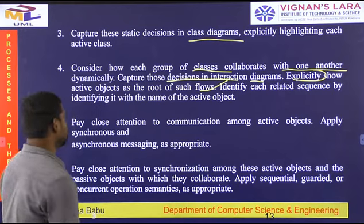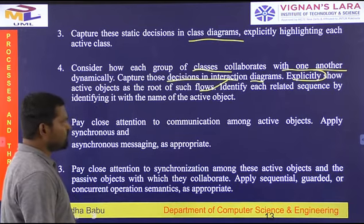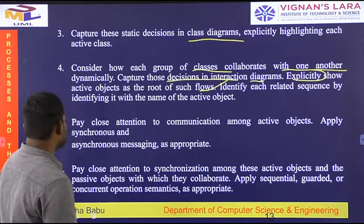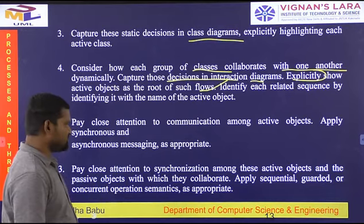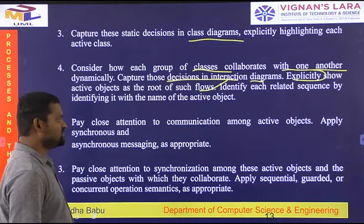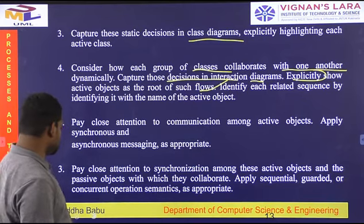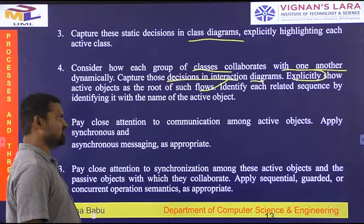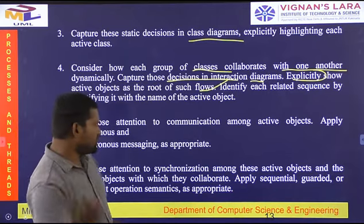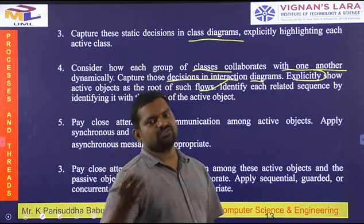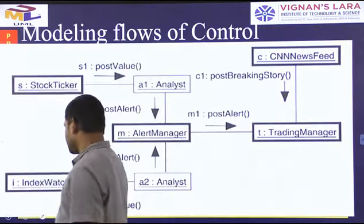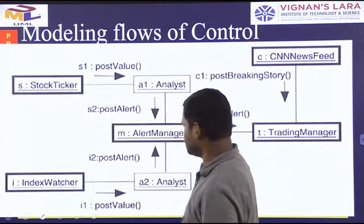Identify what flows are available and pay close attention to communication among active objects. Apply synchronous and asynchronous messaging as appropriate. Pay close attention to synchronization among active objects and the passive objects with which they collaborate. Apply sequential, guarded, or concurrent operations on the particular active object flows.